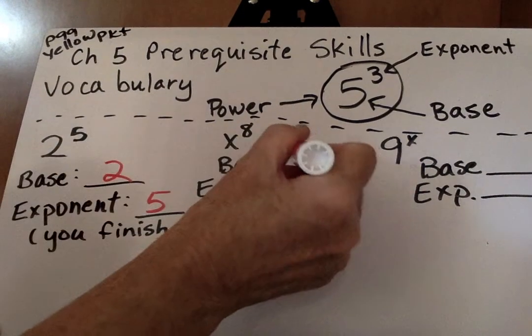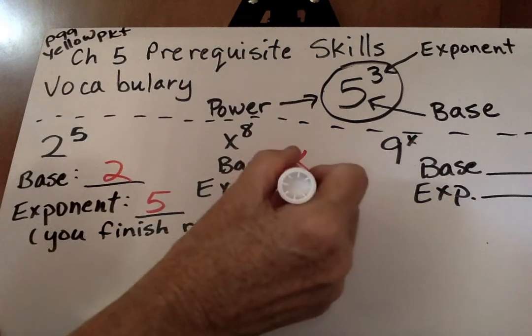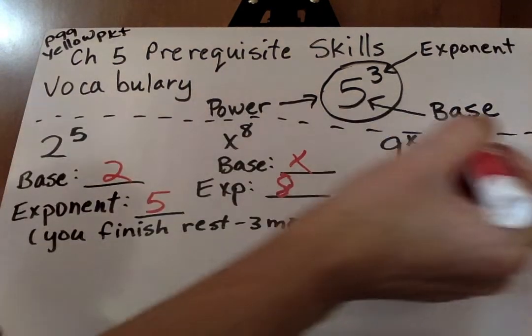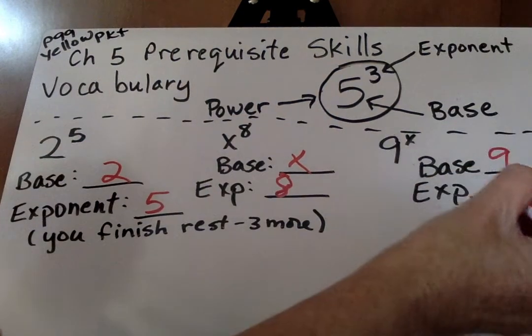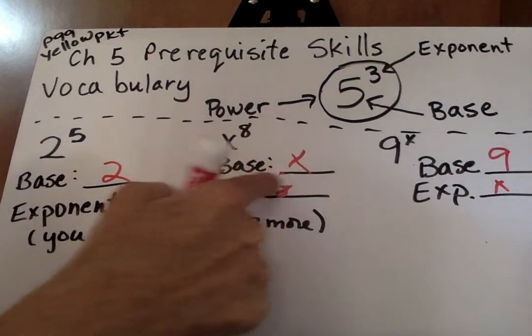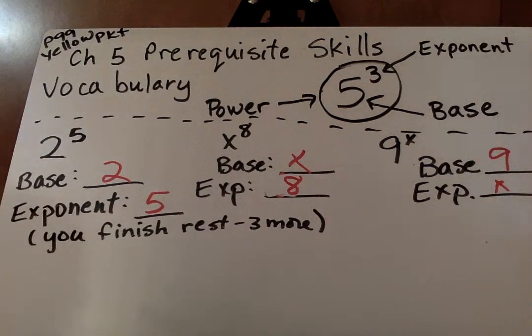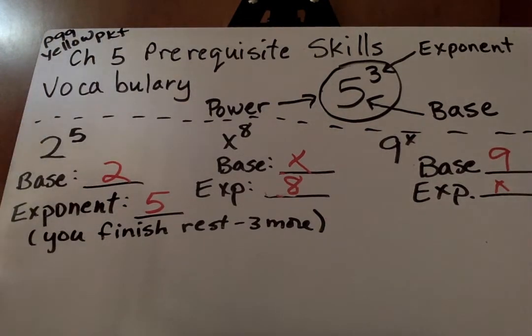Here, our base is x, our exponent is 8. Here, our base is 9, and our exponent is x. I'll let you finish the next 3. I'm going to go ahead and go on to the next exponent rule.